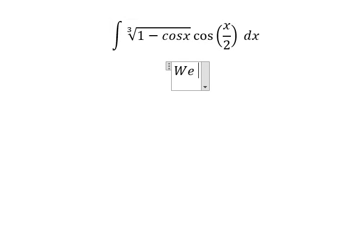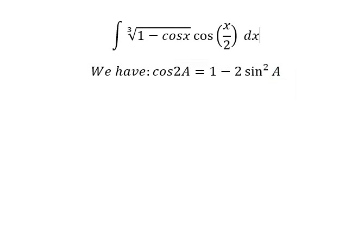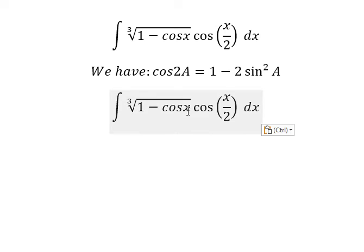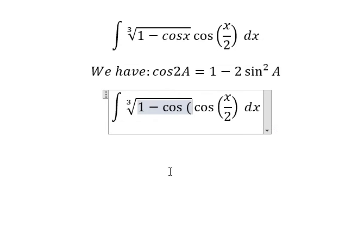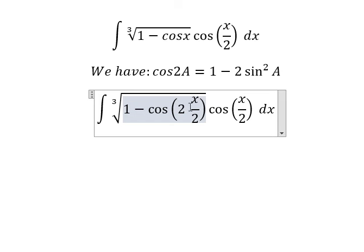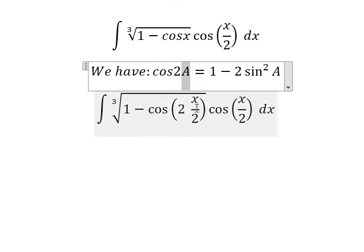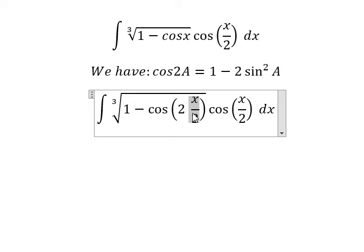About cosine x, we can change into cosine of 2 multiplied by x over 2. Because 2 with x over 2, we have x. Capital A, that is about x over 2.